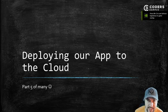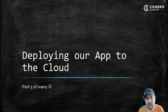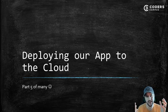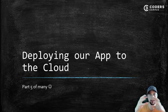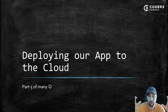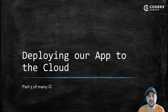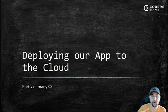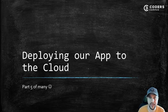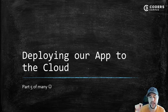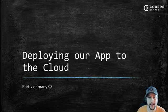Hey there, fellow coder. Welcome to this next lesson in our series where we are building a real-world web app from scratch, leveraging React on the front end, Spring Boot via Java on the back end, and tying it all together with MySQL. This is part five of our mini-series, where we're going to be continuing our saga of deploying this application to the open internet — specifically deploying it to a cloud server. I'll show you all the steps necessary to make that happen.